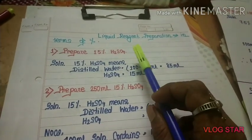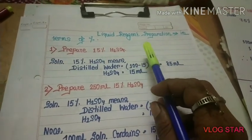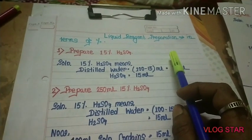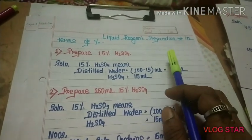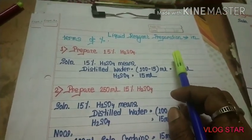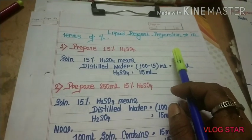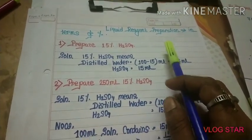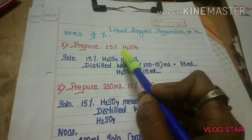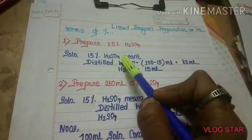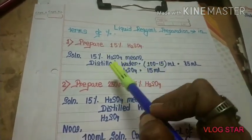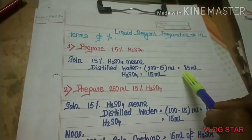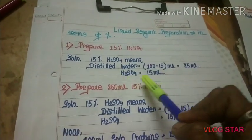Now we are talking about liquid reagent preparation in terms of percentage. In the case of liquid reagents, distilled water and the liquid reagent are both liquid, so the net volume must be 100. For example, 15% H₂SO₄ means distilled water = (100 − 15) = 85 ml, H₂SO₄ = 15 ml.